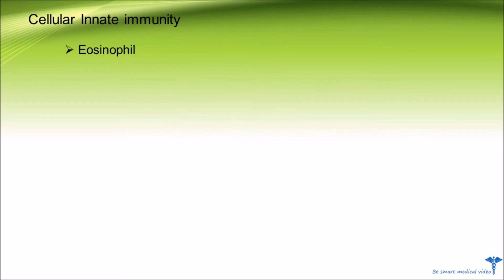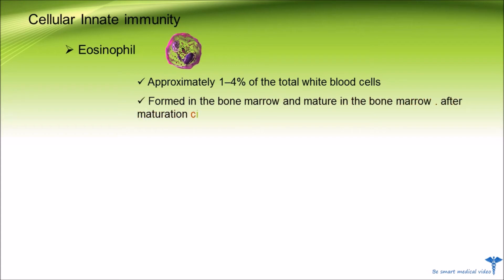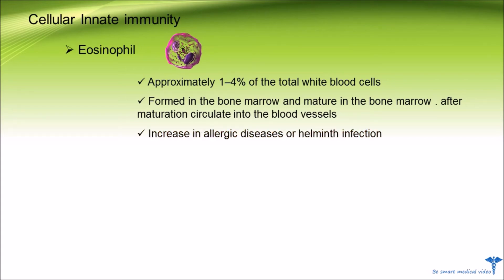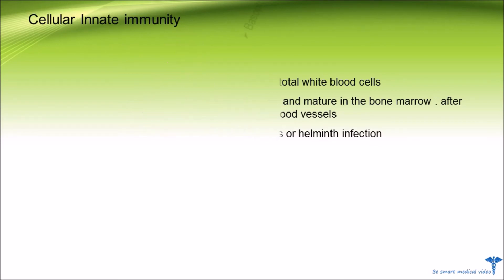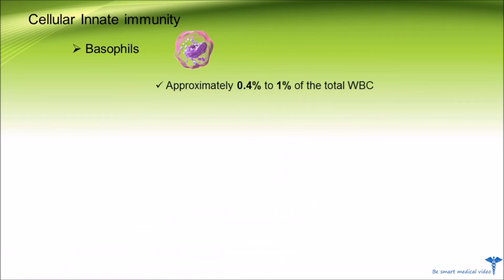Fourth, eosinophils — their cell count is approximately one to four percent of total white blood cells. Eosinophils are formed and mature in the bone marrow, after which they circulate into the blood vessels. Eosinophils increase only in allergic diseases or helminth infection.